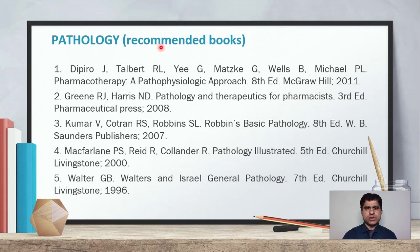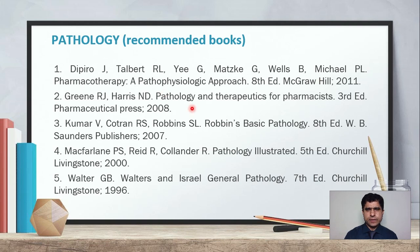Here are the pathology recommended books. The first book is Pharmacotherapy: A Pathophysiologic Approach, 8th edition, 2011, by DiPiro et al. This is the title of the book, and the 8th edition from 2011 is available, but you can also take a newer edition.